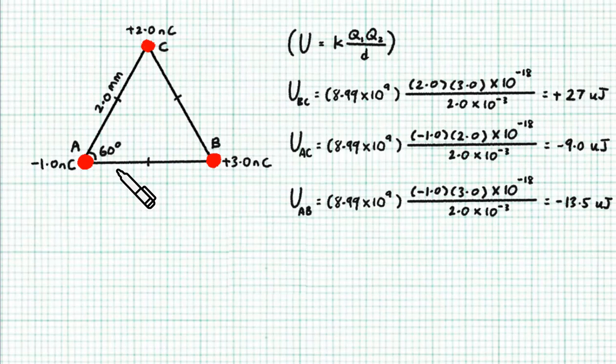And let's not forget there's also EP stored between charges A and B and it turns out to be a negative EPE as well since these two are also unlike charges.